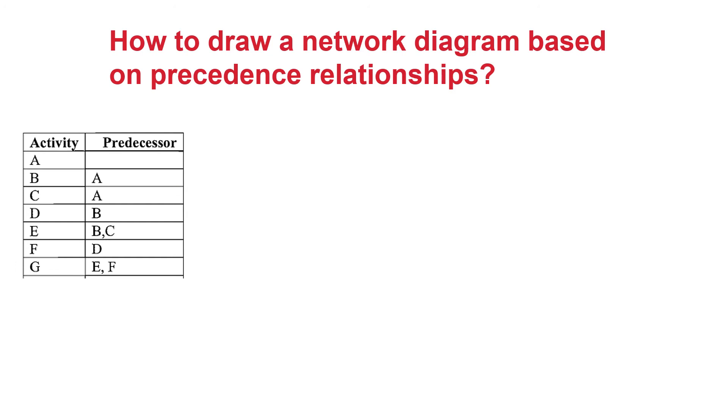So let's review the concepts learned previously by looking at another example. So here you could see a table with a list of activities in the left column and the predecessor relationship indicated in the right column. So if you are watching it maybe you could pause it and draw a network diagram.